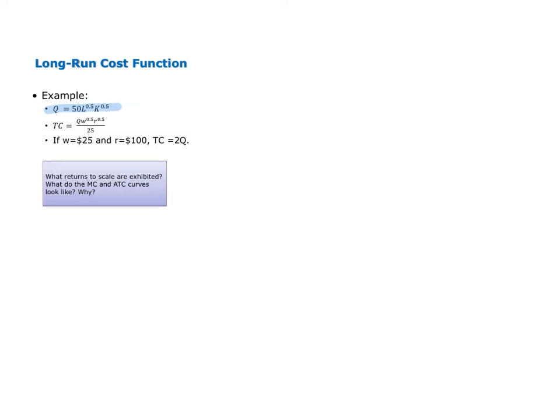To find long-run total cost, we need to add up the cost of labor and the cost of capital. The cost of labor is the price of labor times the labor demand function. The cost of capital is the price of capital times the capital demand function. So first, we need to derive those input demand functions.